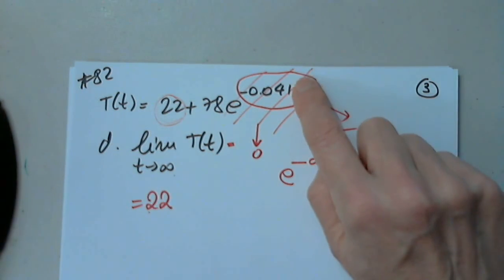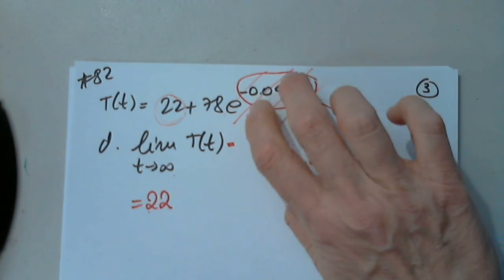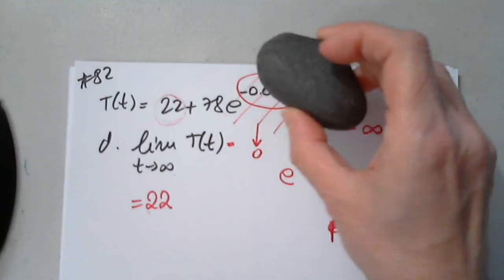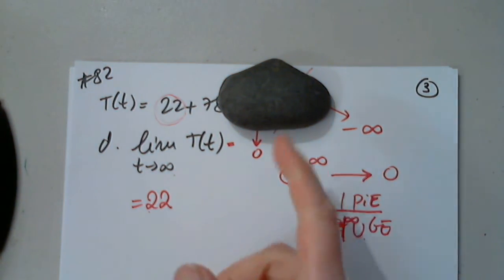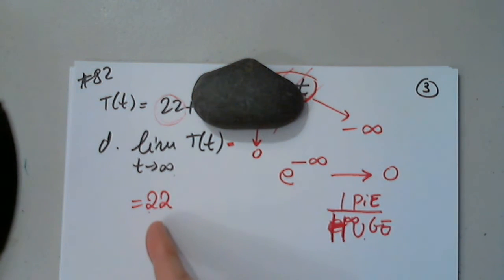When T approaches infinity, this approaches negative infinity. E to negative infinity is 1 over huge. 1 over huge approaches 0. So then this is 0. 0 times 78 is 0. 0 plus 22 is 22.